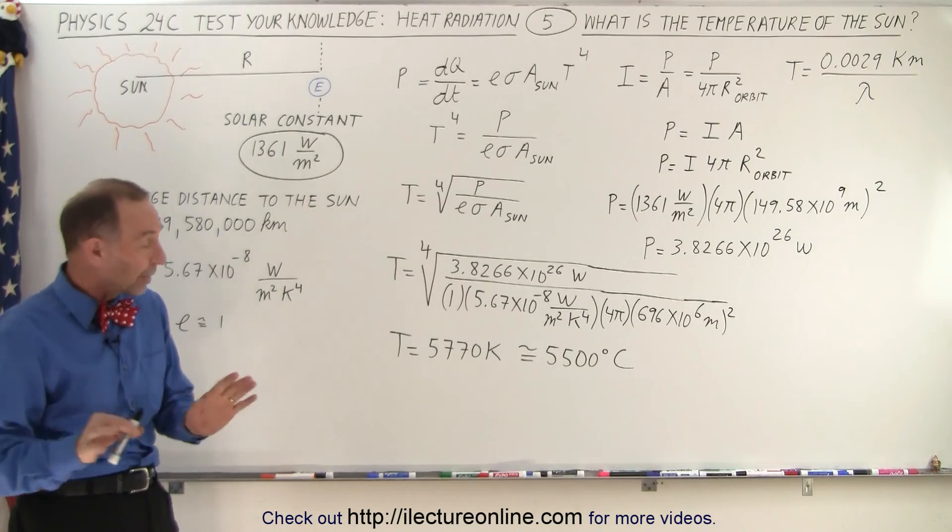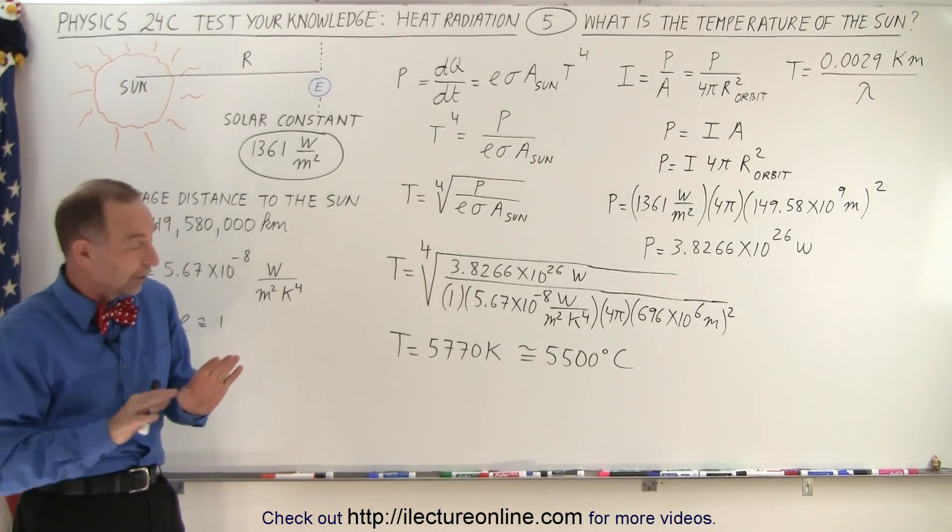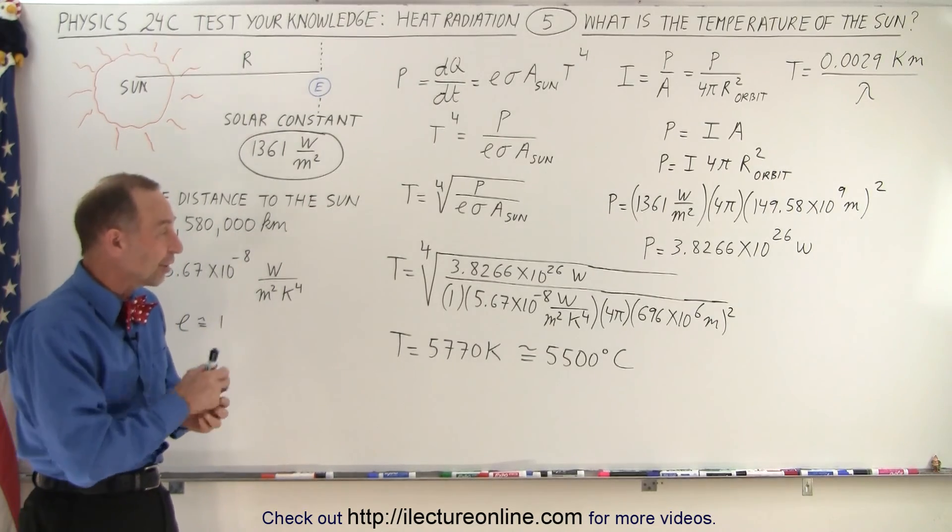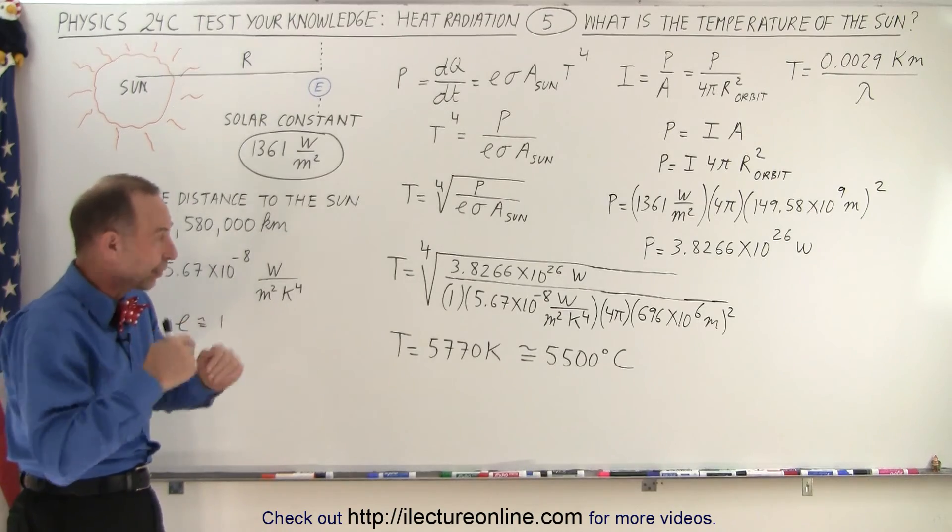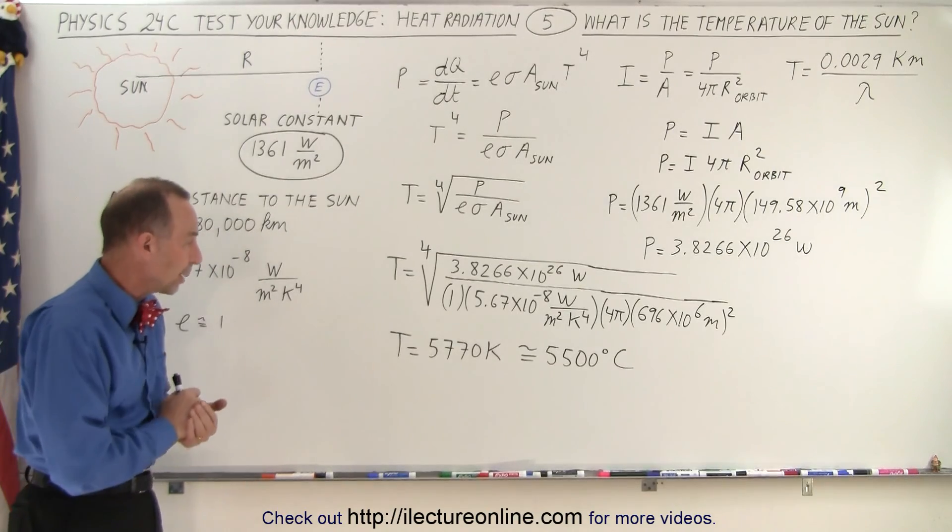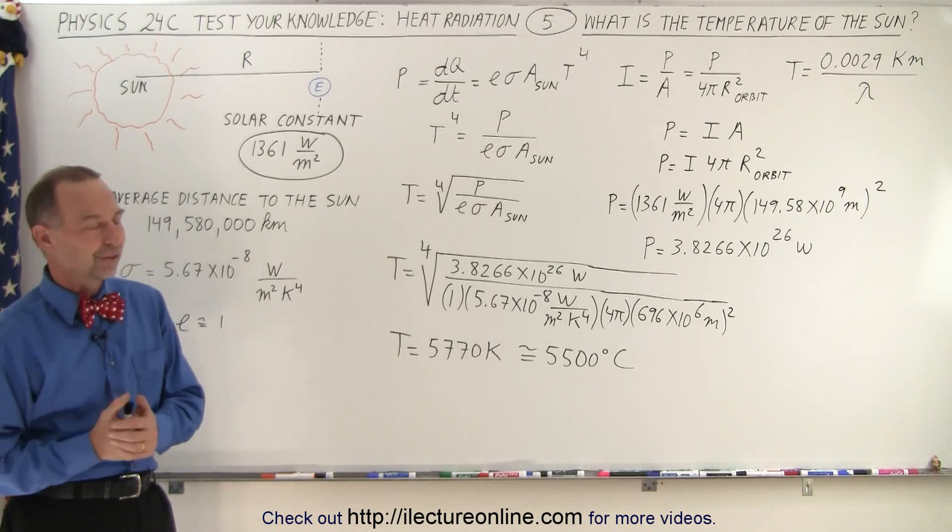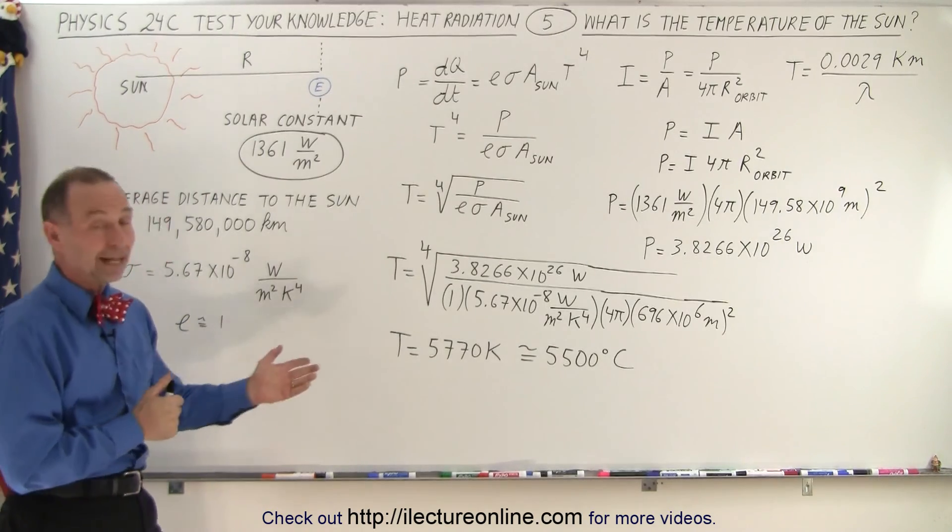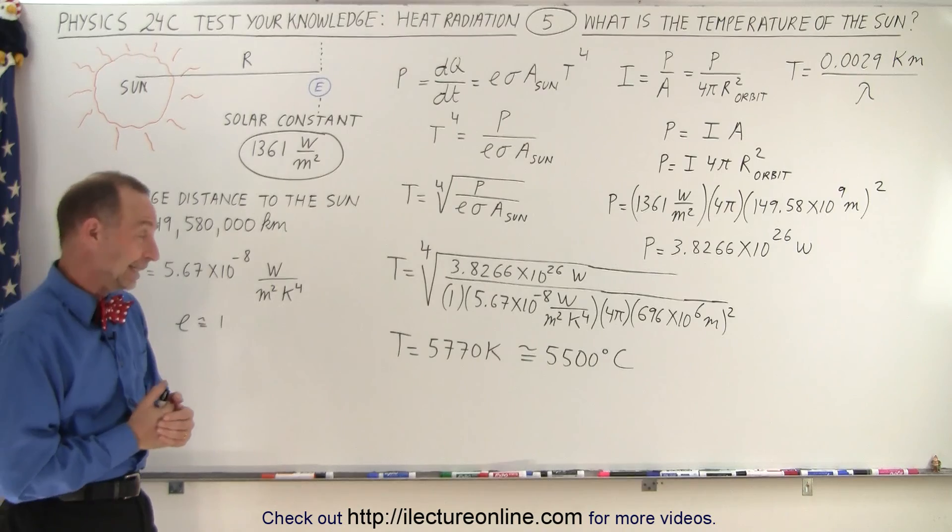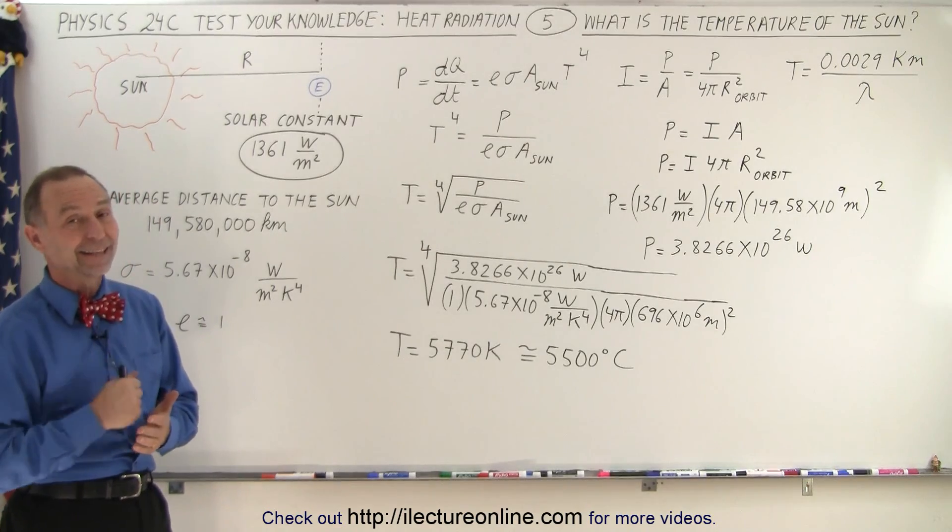So that is the approximate surface temperature of the sun. Of course, there's some slight variations in our exact ability to know the exact radius of the sun, the exact power output, and so forth, but that's a pretty good estimate for the surface temperature of the sun. I would not want to get too close to that. That's pretty hot, and that is how it's done.